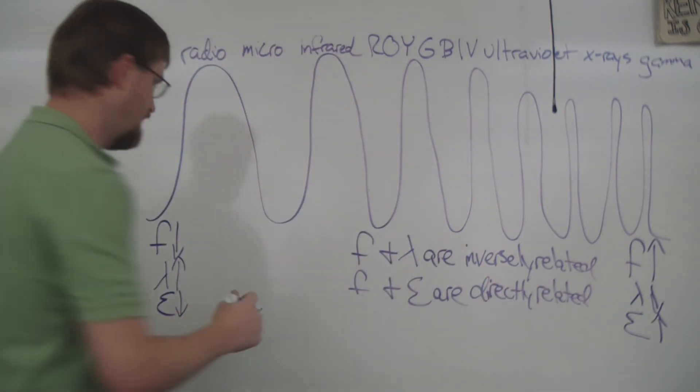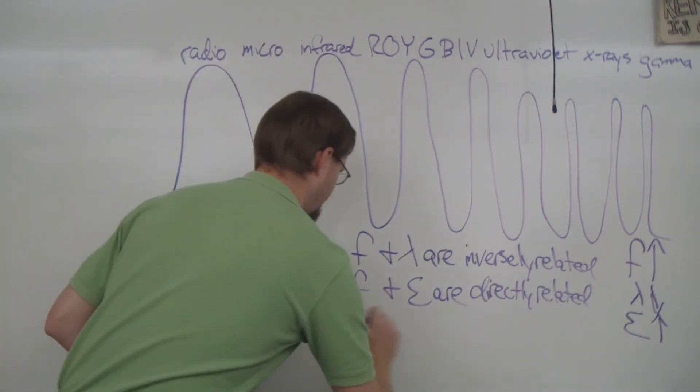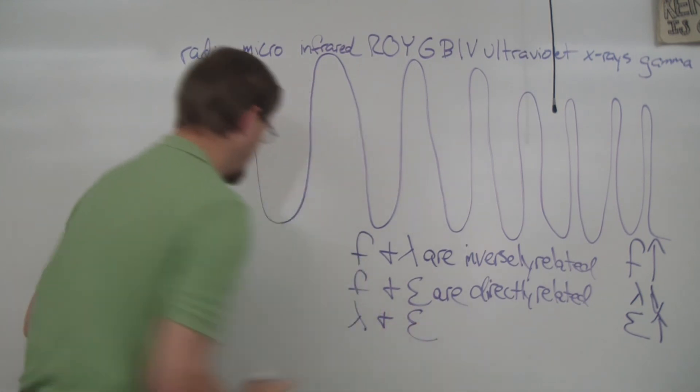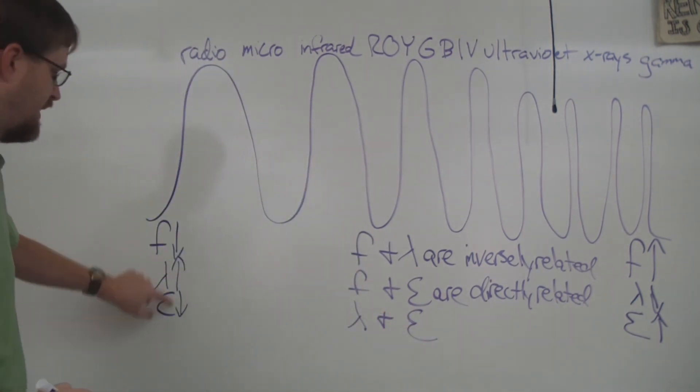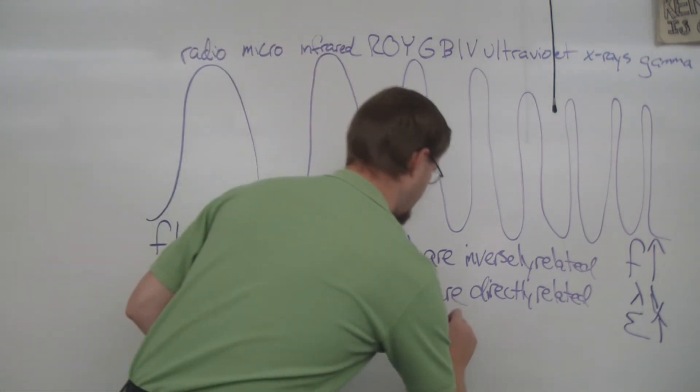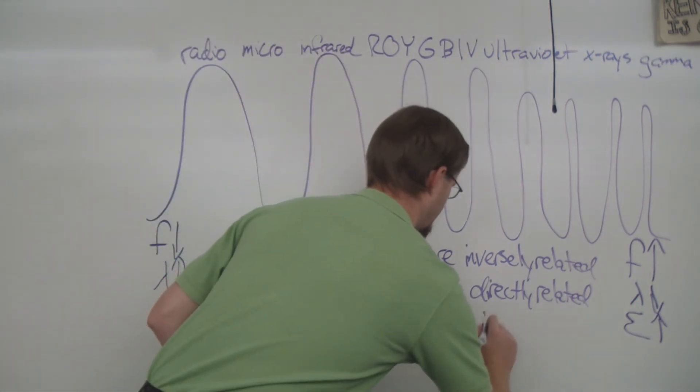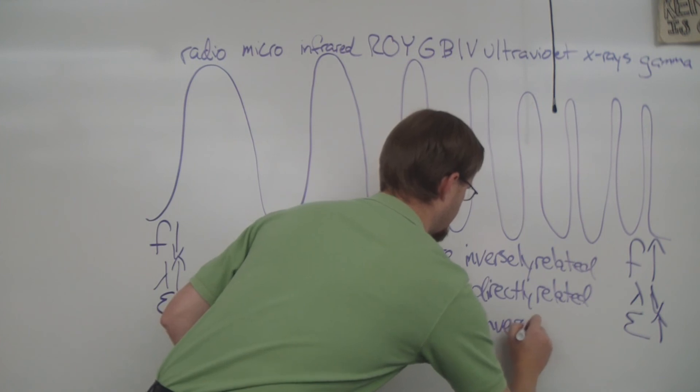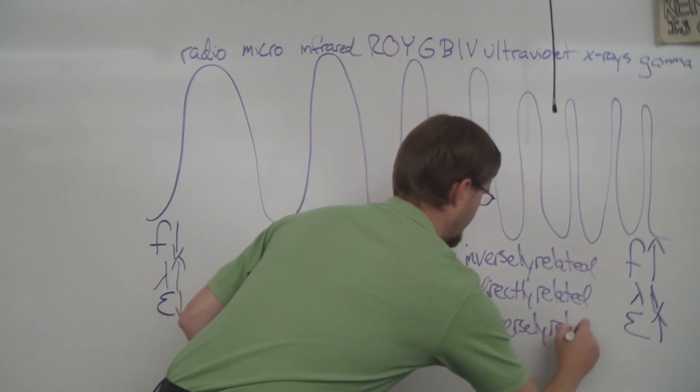And our last comparison is wavelength and energy. So wavelength goes up, energy goes down. So that is opposite. So we've got an inverse relationship right here. They are inversely related.